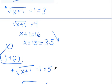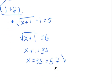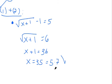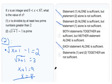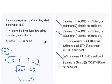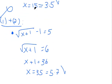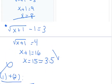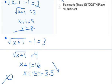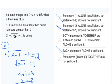x could be 15 and satisfy everything, but x could also be 35 and satisfy everything. Since we can't definitively determine what value x will be — the question asks for the specific value of x — and there are multiple values that satisfy all the conditions, the statements together are still not sufficient. So we eliminate answer choice C as well, and our final answer is E.